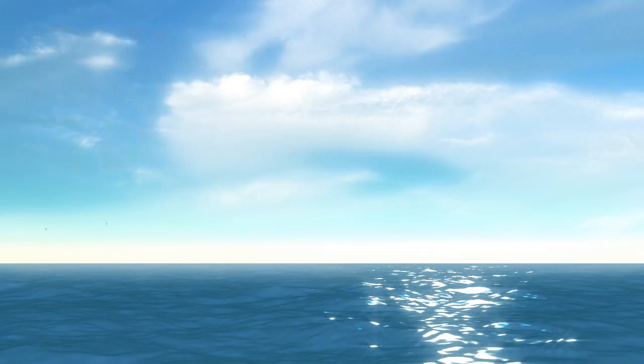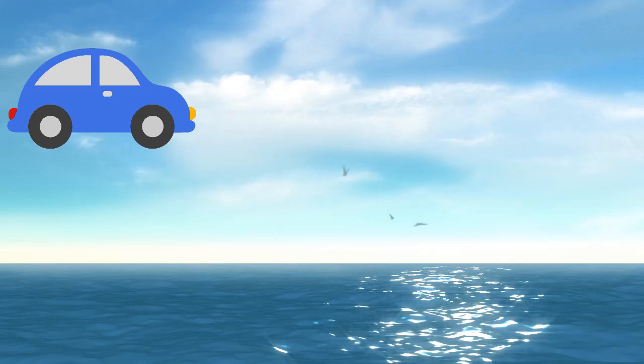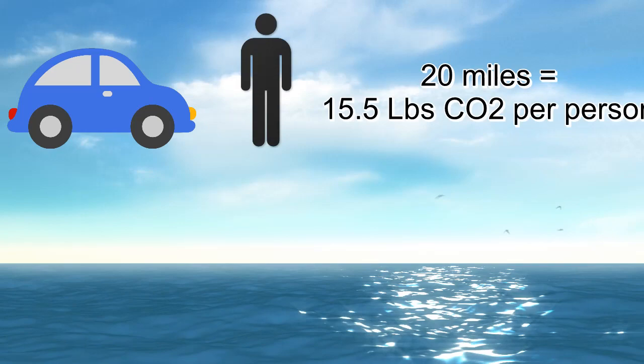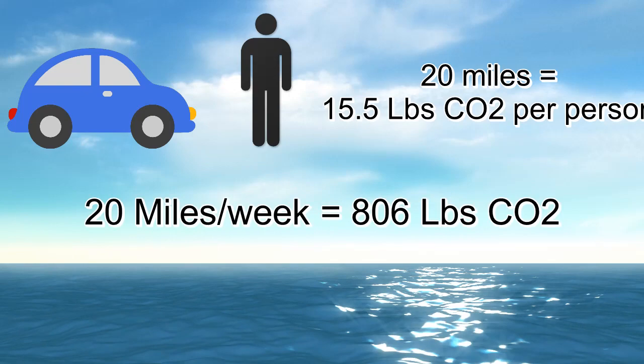Another way to decrease the amount of carbon dioxide you produce outside of the house is carpooling. Driving a car on average produces 7.75 pounds of carbon dioxide per 10 miles driven. If you drive one other person to a place 20 miles away, you'll save 16.5 pounds of carbon. If you carpool once a week, you can prevent 806 pounds of carbon dioxide every year and save money on gasoline.